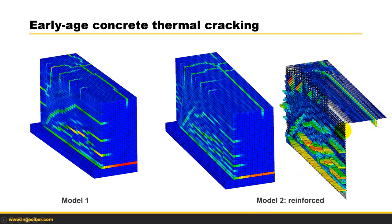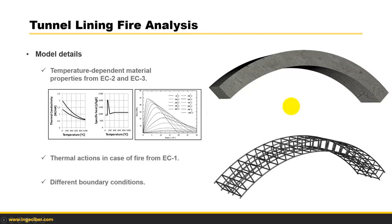In this plot, we are also plotting the stress in reinforcement. These are the details of example number 2. Temperature-dependent material properties are taken from Eurocode 2 and Eurocode 3 — these are the thermal conductivity and specific heat which depend on temperature, as you can see in these charts. There is also compression stress versus strain shown in this chart. Then the thermal actions in case of fire from Eurocode 1 are applied, and different boundary conditions will be applied and we will see the different results.